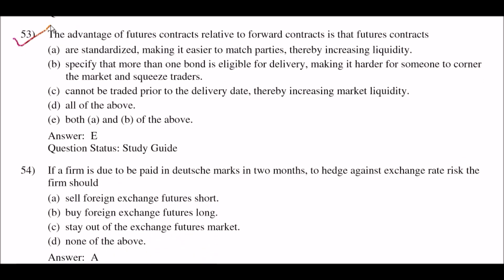Next question: the advantage of futures contracts relative to forward contracts is that futures contracts — option A: are standardized, making it easier to match parties, thereby increasing liquidity; option B: specify that more than one bond is eligible for delivery, making it harder for someone to corner the market and squeeze traders; option C: cannot be traded prior to the delivery date, thereby increasing market liquidity; option D: all of the above; option E: both A and B of the above. The right answer is option E: both A and B. Futures are standardized increasing liquidity, and specify more than one bond for delivery preventing market cornering.